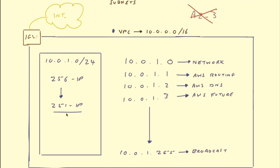So now we've covered what a VPC is, we've looked at subnets both public and private, and also how it's best to architect your subnets across multiple availability zones for high availability.